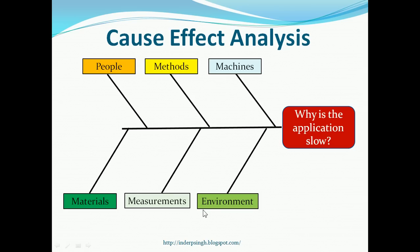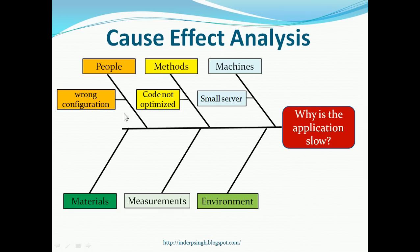Now, the group brainstorms about possible causes of the effect. The facilitator puts each cause in the appropriate category. For example, a cause for slow application could be small server. This is added to the Machines category. Another possible cause could be that the application source code is not optimized for performance. This is added to the methods category. Another cause could be wrong server configuration.